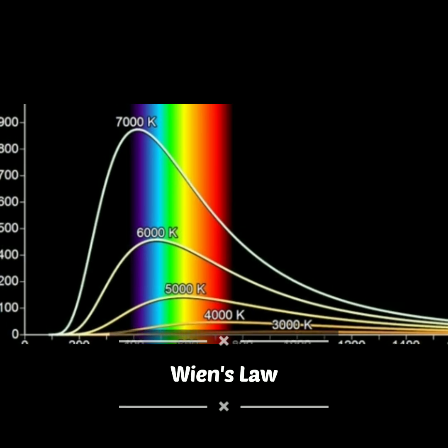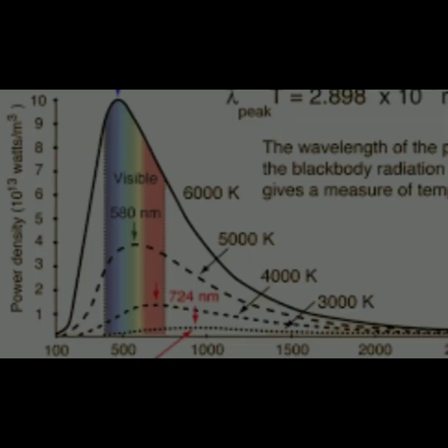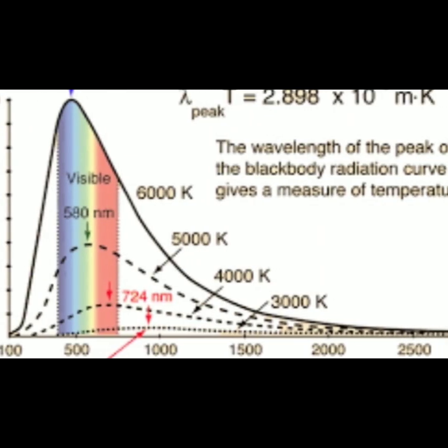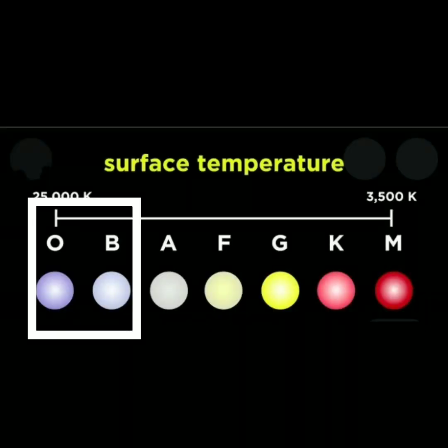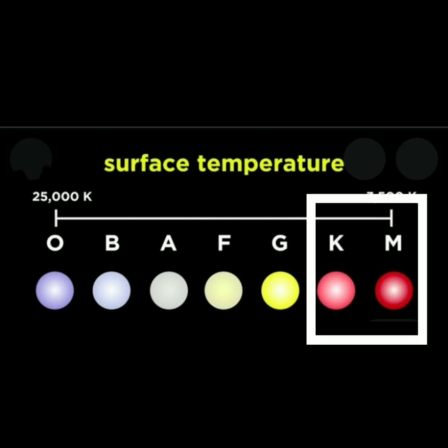This classification based on temperature is actually derived from Wien's law regarding blackbody radiation. Hotter objects like O and B stars are blue, and cooler objects like K and M stars are red.